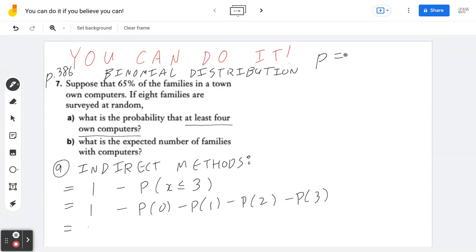What that really means is you can define p and q to be successful and not successful. So in this case, 65% of the families own a computer, which means it's going to be 0.65.